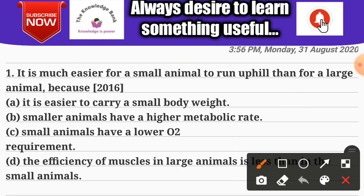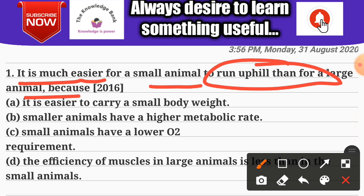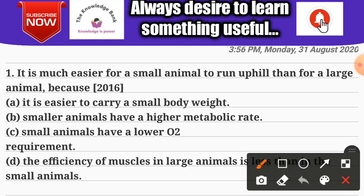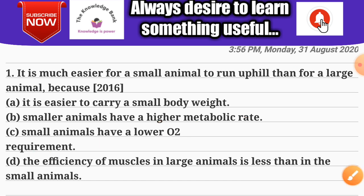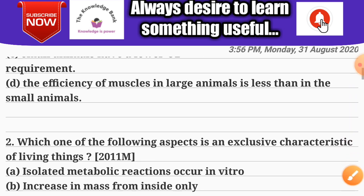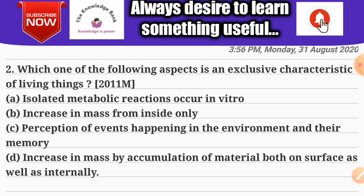Question number one: it is much easier for small animals to run uphill than for large animals. The options are: A) it is easier to carry a small body weight; B) smaller animals have a higher metabolic rate; C) smaller animals have a lower oxygen requirement; D) the efficiency of muscles in large animals is less than in small animals. The correct answer is option B — smaller animals have a higher metabolic rate.